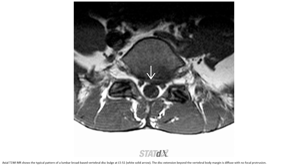This is an example on sagittal T1WI showing the typical pattern of lumbar broad-base disc with protrusion at L1 and L5-S1. The solid arrow indicates the disc extension beyond the vertebral body margin, with the disc distributing diffusely and no focal protrusion.